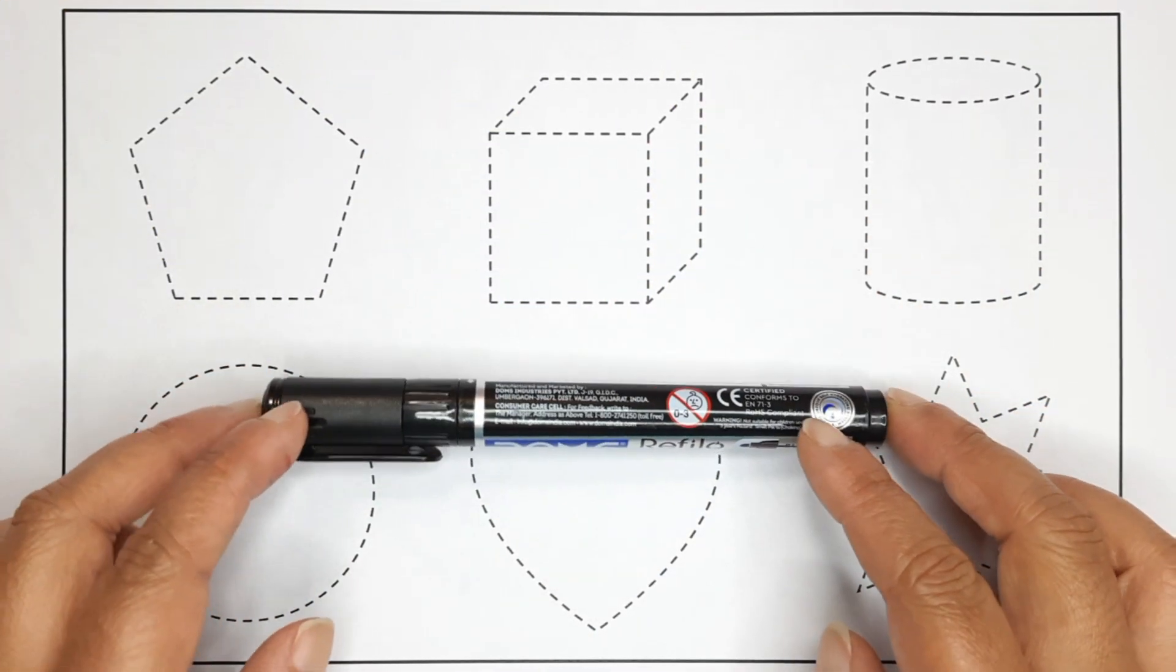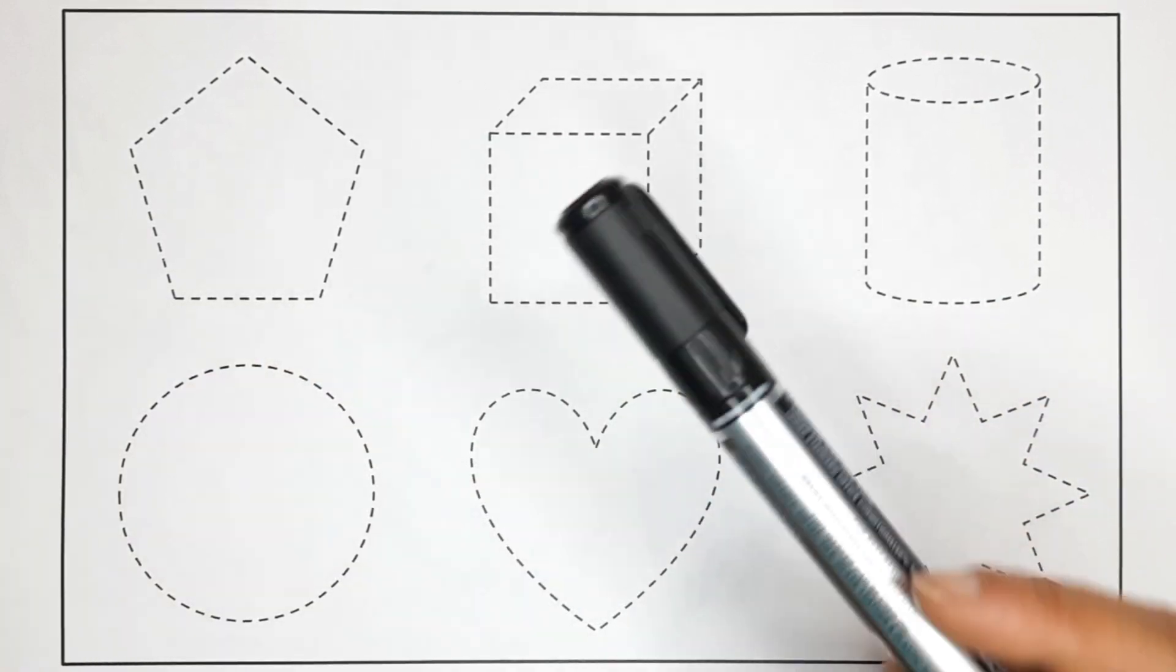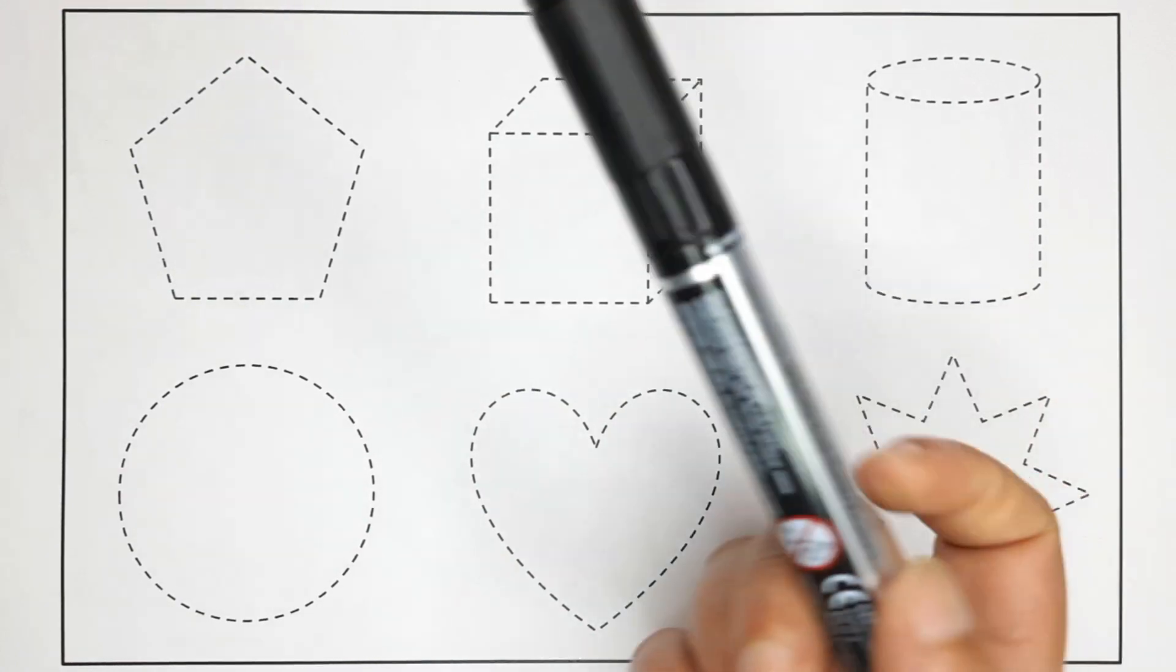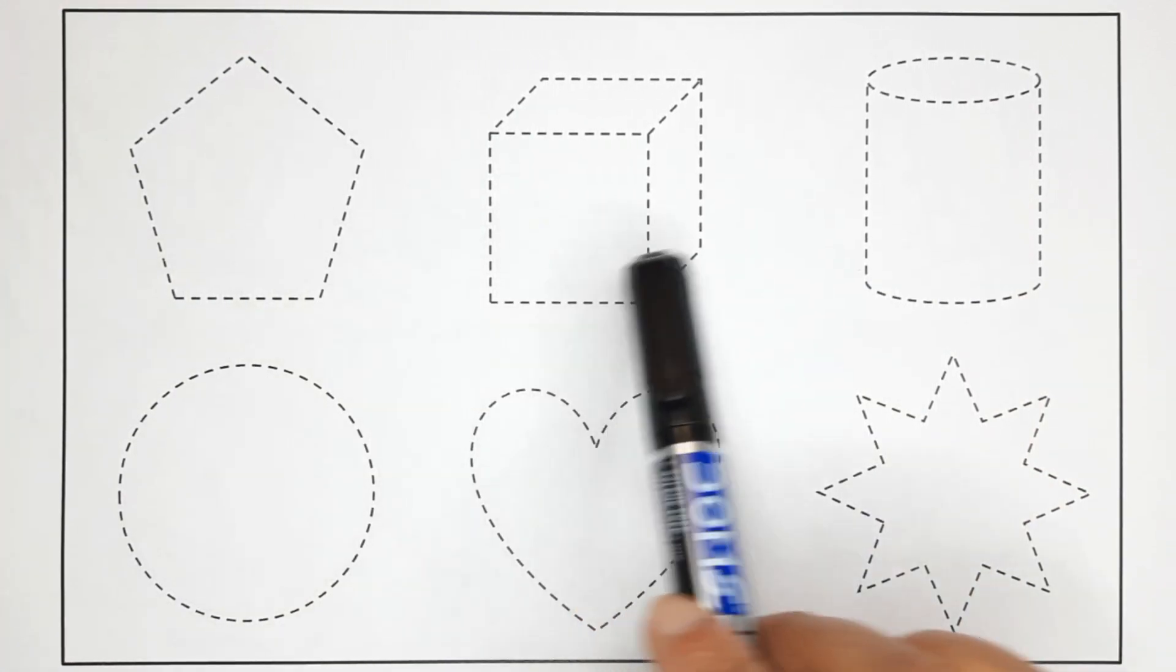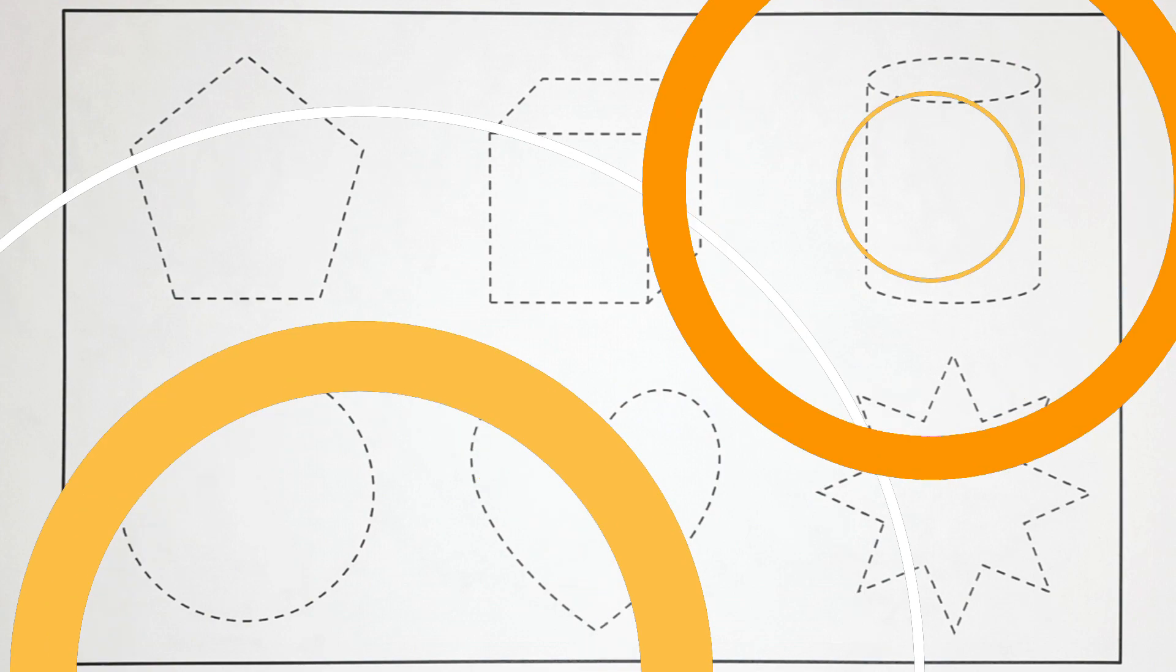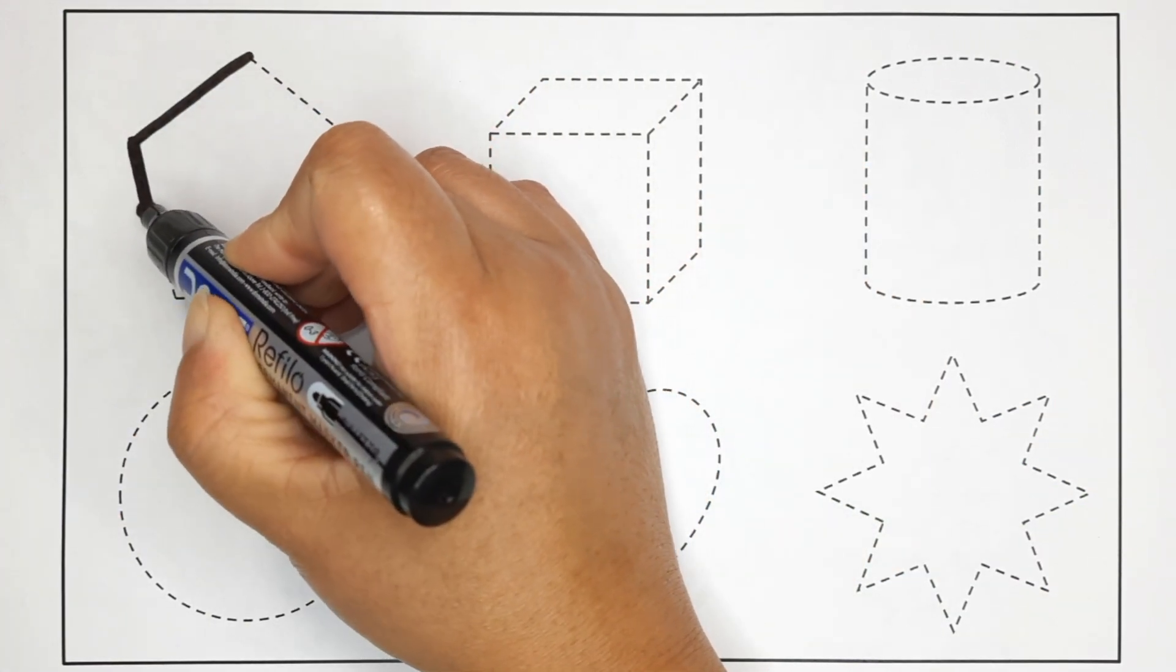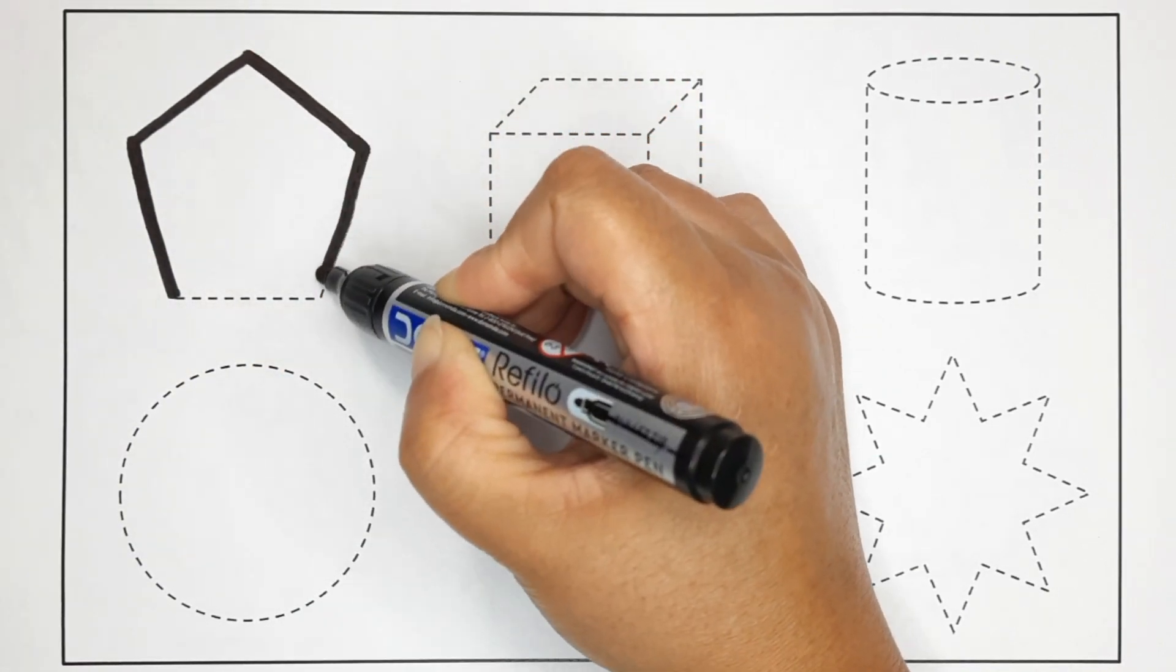Hello kids, welcome to my channel. Today in this video we'll be learning shapes name. This is black color. Now we'll draw the shapes: pentagon, cube, cylinder, circle, heart, eight point star. Now let's draw the shape pentagon.